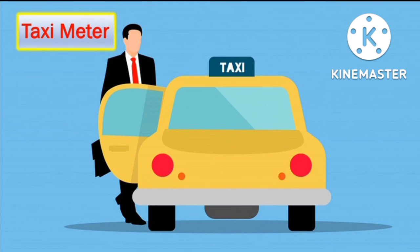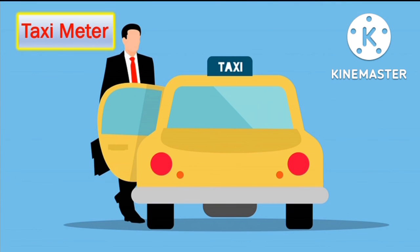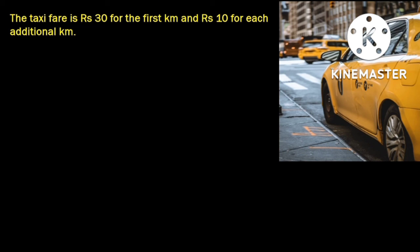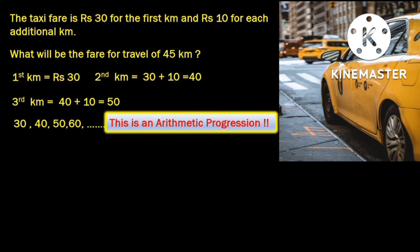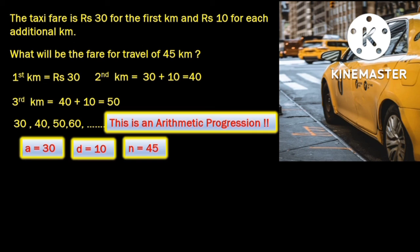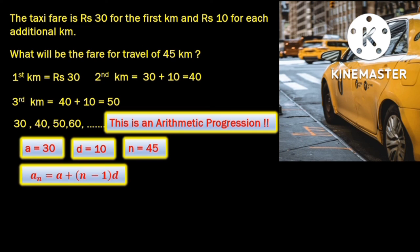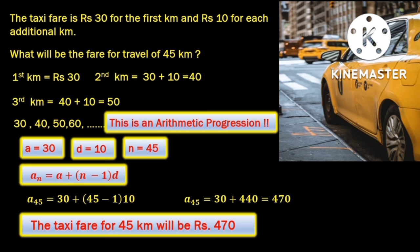Let's see how a taximeter uses arithmetic progression to calculate its fare. Suppose the fare is fixed at Rs. 30 for the first kilometer and then Rs. 10 extra for each additional kilometer. The first kilometer charge is Rs. 30, for the next it would be 40, then 50, and so on — these numbers form an arithmetic progression. Substituting the values of A, D, and N in the formula for the nth term of an AP, you can find that for a 45 kilometer trip, the cost would be Rs. 470.